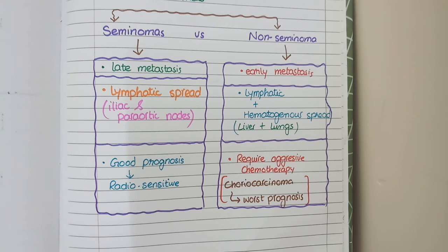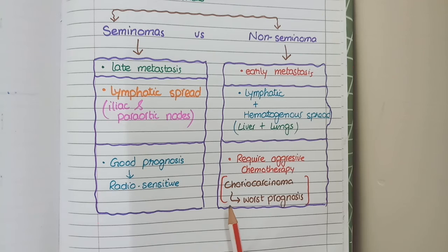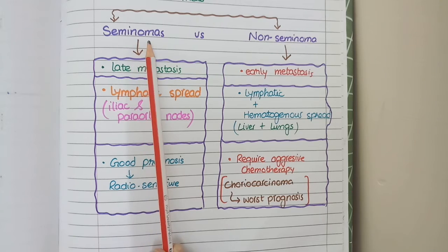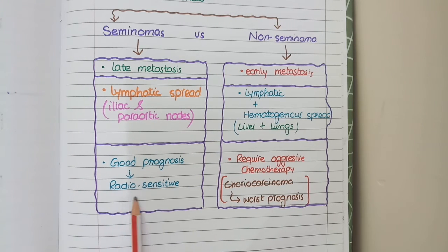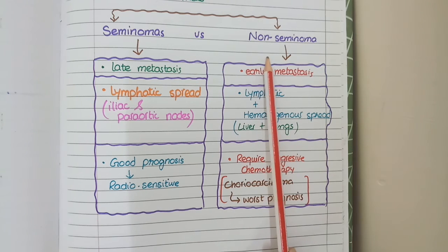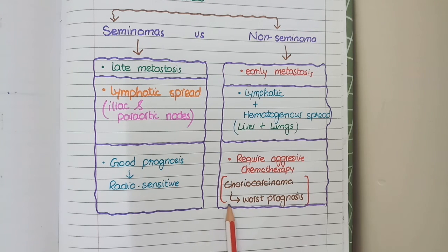Since testicular seminomas are prognostically good and do not metastasize early, they can simply be eradicated by radiotherapy. In contrast, non-seminomatous tumors, which tend to metastasize to distant organs, require aggressive chemotherapy. Among non-seminomatous tumors, the one with the worst prognosis is choriocarcinoma.